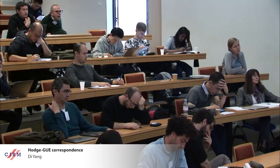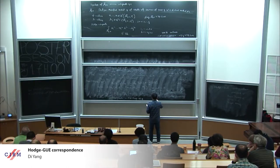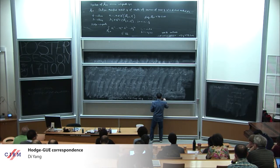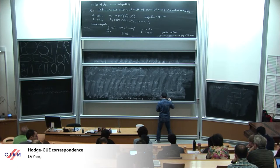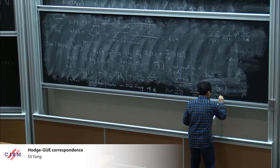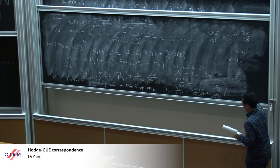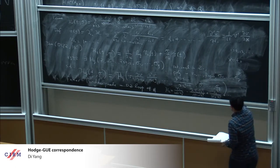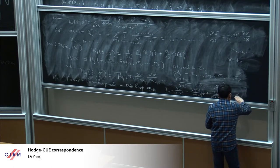The proof uses the Dubrovin-Zhang loop equation and the Faber-Pandharipande equation. The polynomial dependence in sigma can also be controlled by some homogeneity. Let me give you just the first few terms of H_2 to give an impression of what is going on — the coefficients are some very nice numbers that relate to Hodge integrals.